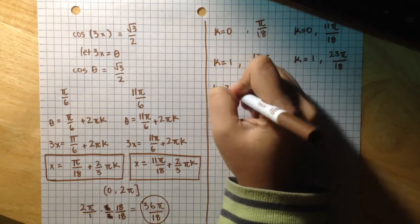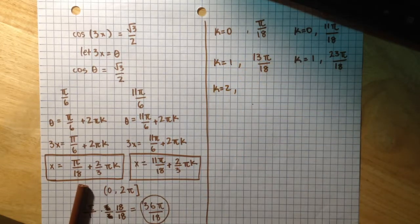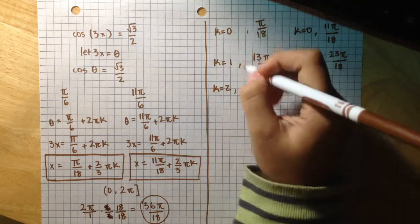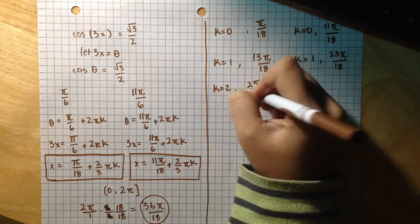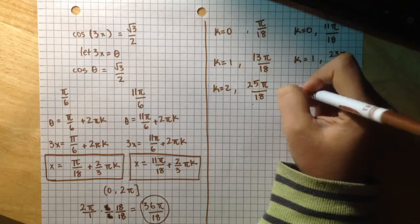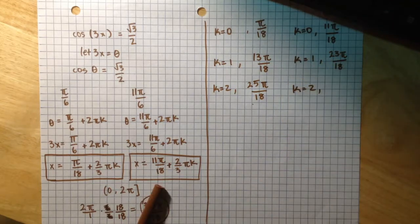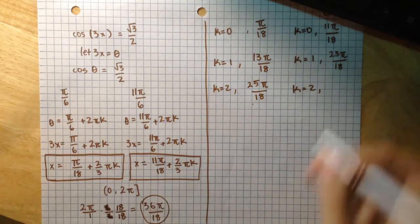k equals 2 in this equation will give us 25π over 18, and k equals 2 in this equation will give us 35π over 18.